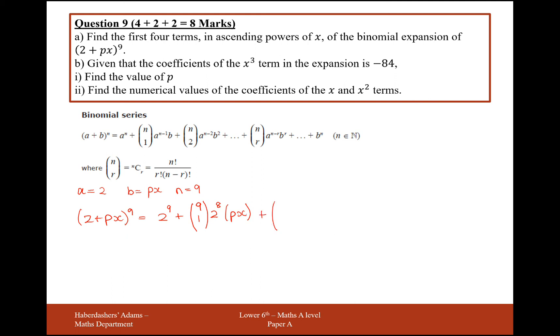Okay, carrying on, so I then do 9 choose 2, and then I do 2 to the power of 7, and then I do (px) squared. Be very careful here, you've got your square, your brackets around your squared here. If it's just px squared with no brackets, you wouldn't be squaring the p, but you have to square the p, so make sure you square the p. Okay, we carry on this formula here, so we're at r, so here, effectively, r is 3 for our third, for our fourth term. So it's 9 choose 3, bracket 2, 9 minus 3 is 6, and it's (px) cubed.